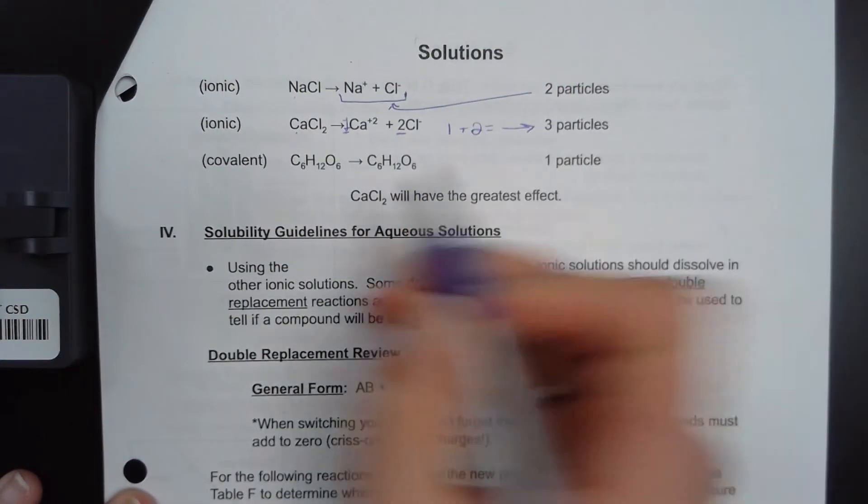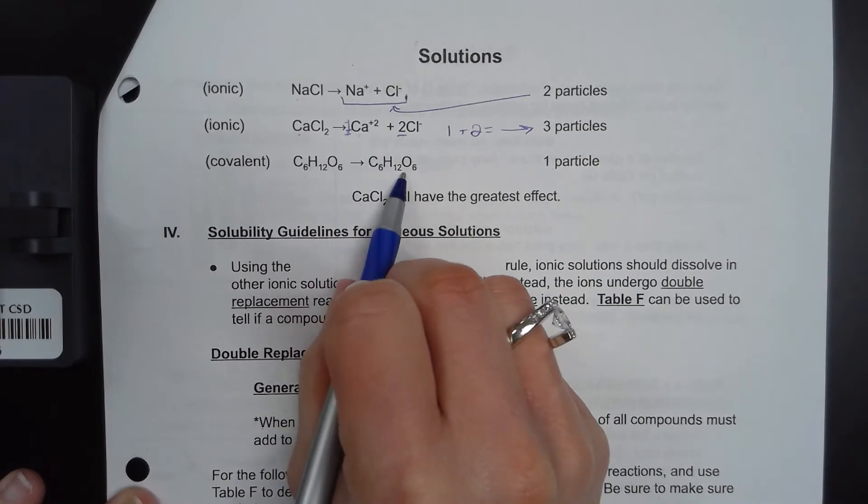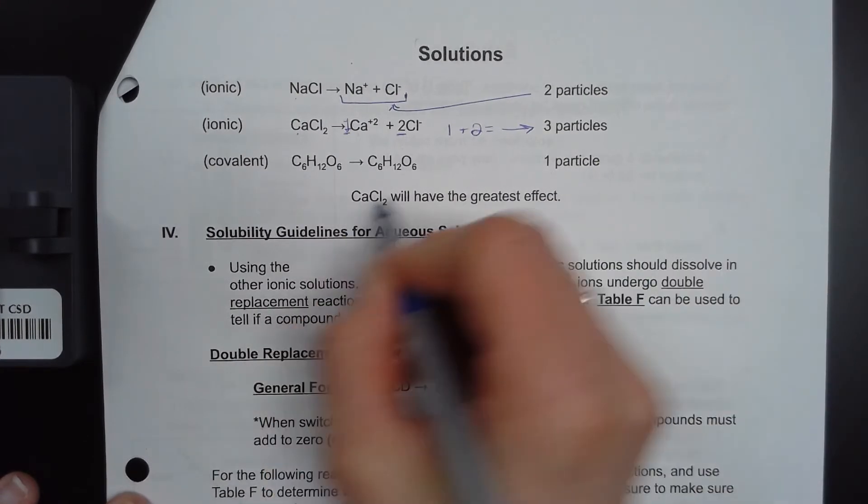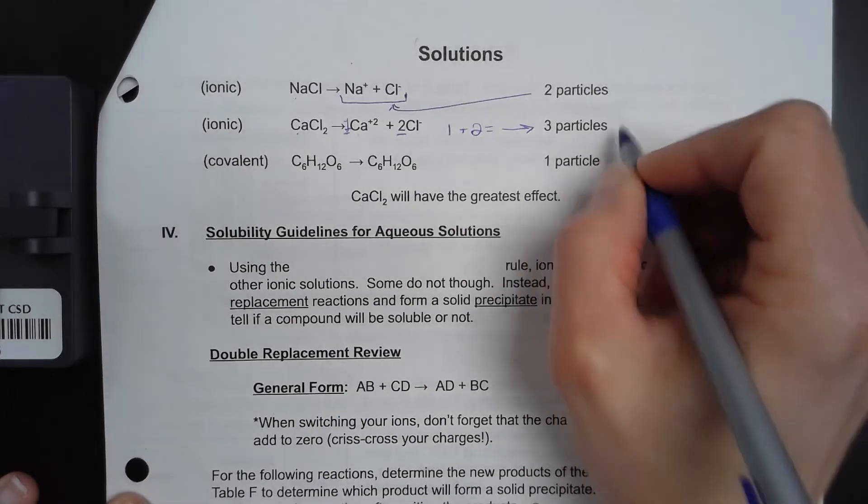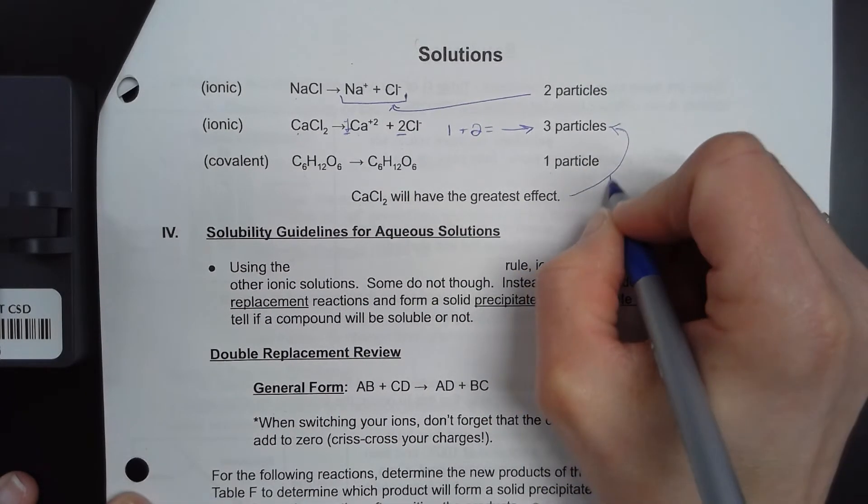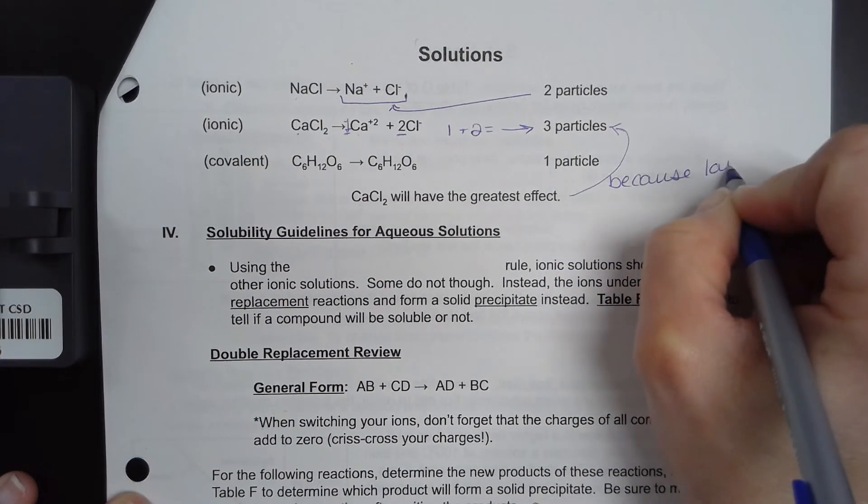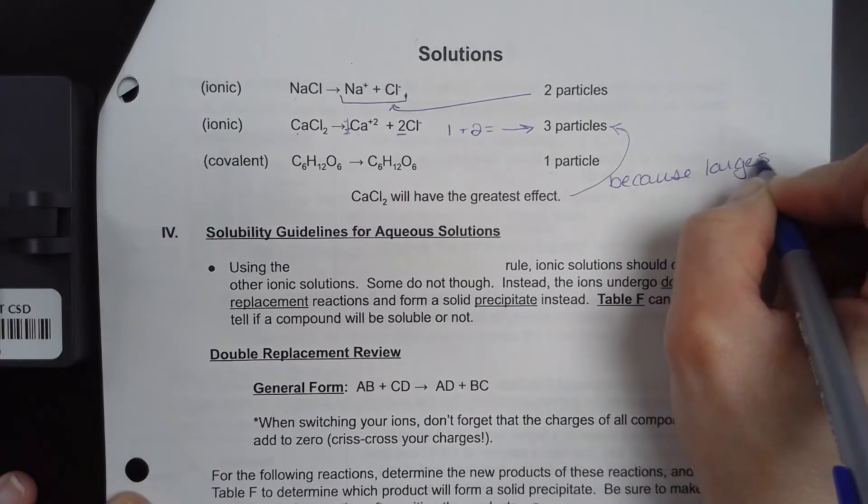Now covalent doesn't break up. So it's one particle. Because of this, CaCl2 will have the greatest effect because it has three particles, the largest number of particles.